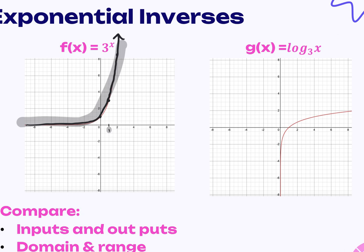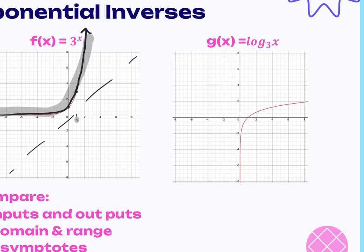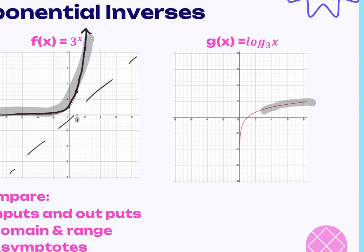A log function is the inverse of the exponential. If I flip it over the y = x line, I end up with a log of the same base, and a log function hugs a vertical asymptote. It still grows without bound, but your growth is smaller because you're not raising it exponentially. You have an x-intercept at (1, 0), a coordinate point at (3, 1), and a coordinate point at (9, 2).